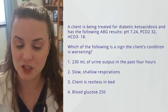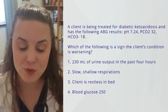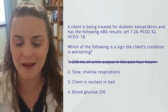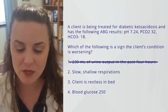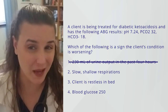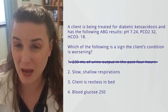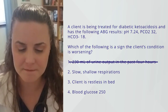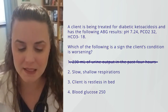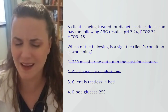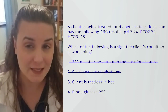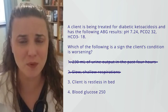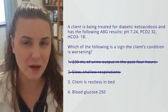Which of the following is a sign the client's condition is worsening? We have 230 milliliters in urine output in four hours — that's within normal limits, so I don't think my client is getting worse there, I can eliminate that one. I have slow, shallow respirations. I expect my client to have deep and rapid respirations, so I'm not sure about this one — I'm going to hang on to it and compare it to number three. The client is restless. I don't like restless — restless tells me something is going on with my client.